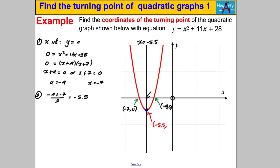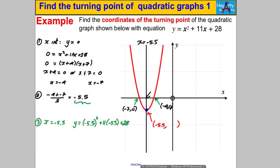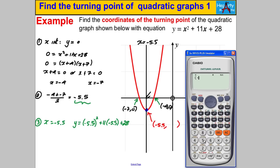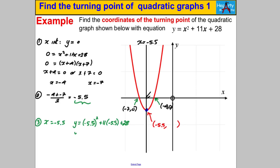The last stage: substitute x = -5.5 into the quadratic to find the matching y-value. We calculate (-5.5)² + 11 × (-5.5) + 28. On the calculator, use brackets: (–5.5)² + 11(–5.5) + 28, which gives -2.25. So y = -2.25 and the coordinates of the turning point are (-5.5, -2.25). That looks sensible given the graph we've seen.